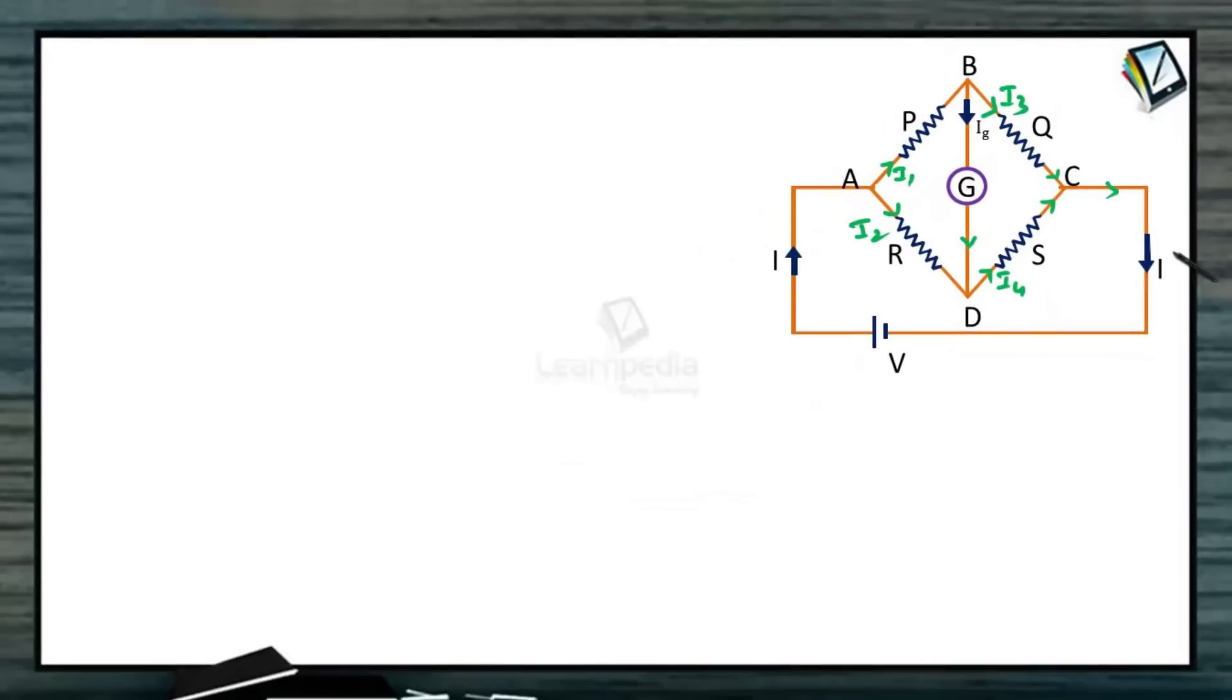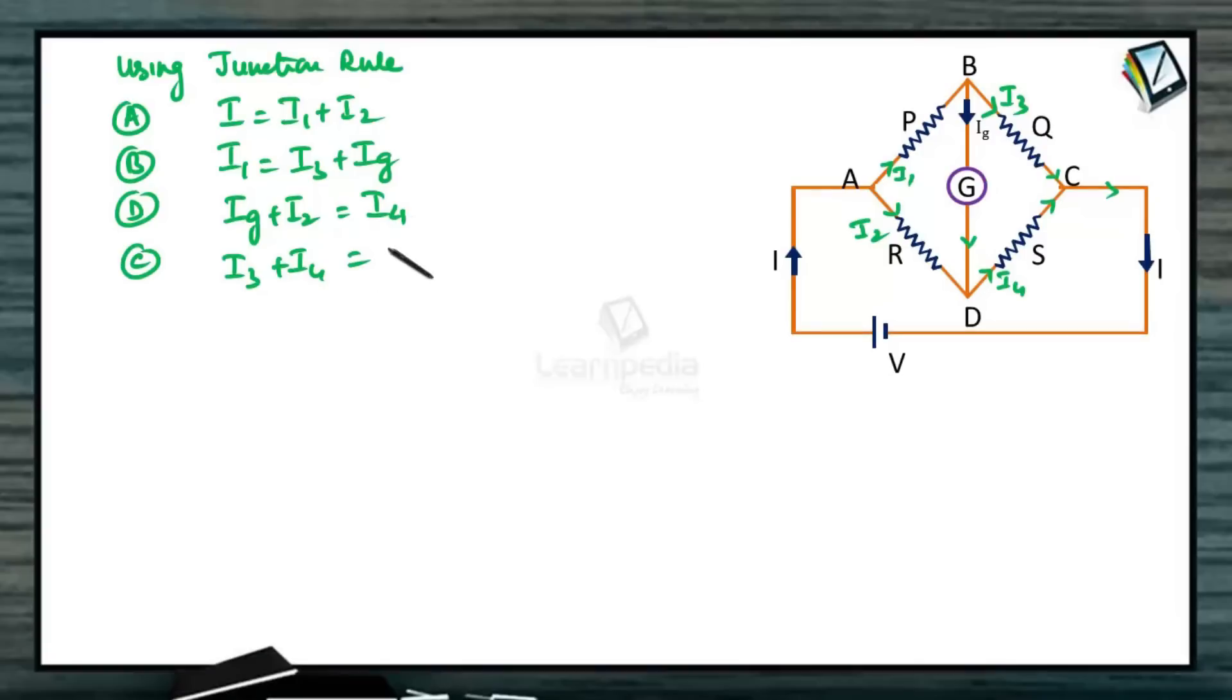Now using junction rule, at junction A we can write I equals I1 plus I2. At junction B, I1 equals I3 plus IG. At junction D, IG plus I2 gives the current I4. At junction C, I3 plus I4 gives the current I.